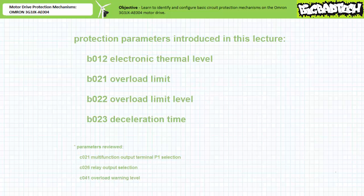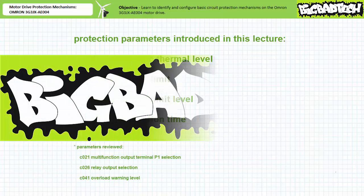That's about it for this short applications exercise. In conclusion, we learned to identify and configure basic protection mechanisms on the OMRON 3G3JX AE004 motor drive. We learned to read error codes associated with important fault conditions, examined the response to an overload trip, discussed early overload warning mechanisms, and demonstrated the active overload limitation response employed by the OMRON 3G3JX AE004 motor drive. Remember to review these concepts, and thank you for your attention. Be sure to check out the Big Bad Tech channel for additional resources and updates.